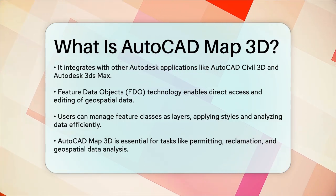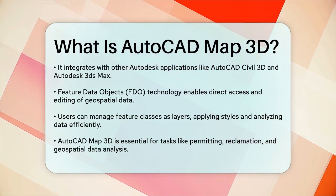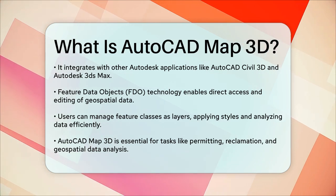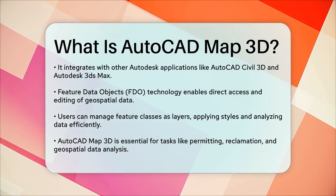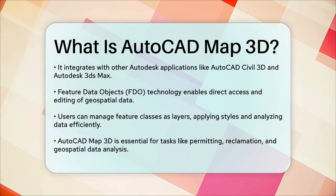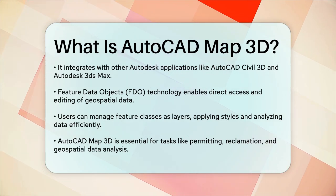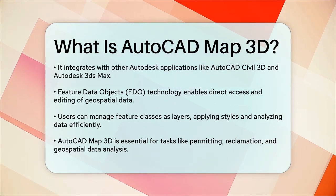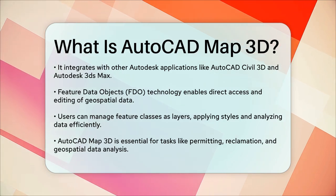In summary, AutoCAD Map 3D is a versatile tool that combines the best of AutoCAD and GIS, making it an essential tool for anyone working with spatial data. Whether you're creating maps for permitting and reclamation activities or analyzing complex geospatial data, AutoCAD Map 3D has the tools you need to get the job done efficiently and accurately.